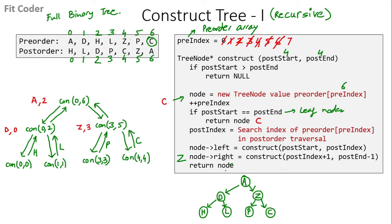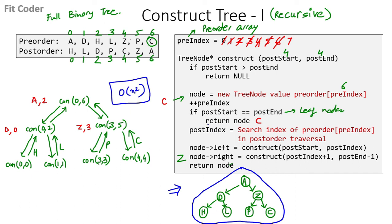The recursion terminates and we return the root node A. This is the full binary tree obtained from the given pre-order and post-order traversal. Now looking at the time complexity: it is O(n²) because of the search step. At every call to the construct function, we are searching the post-order traversal array for values of pre-order at pre-index, which takes O(n) time, making the entire algorithm O(n²).